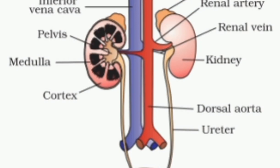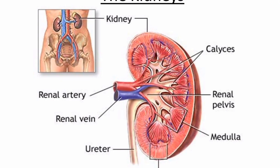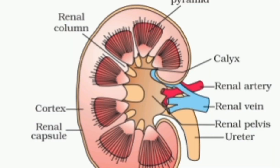The human excretory system consists of a pair of kidneys, a pair of ureters, one urinary bladder, and one urethra. Kidneys are reddish brown, bean-shaped structures situated in the abdominal cavity, attached to the dorsal body wall, one on either side of the back. The right kidney is placed slightly lower than the left kidney due to the presence of the liver. Each kidney measures about 10 cm in length, 5 to 6 cm in width and 4 cm in thickness.